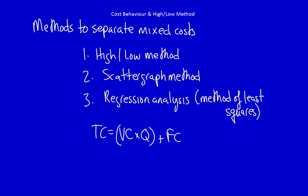There are three methods to separate a mixed cost into its fixed and variable components: the high-low method, scatter graph method, and regression analysis. When we do that, we end up with a cost function. We want the cost function because we want to be able to predict costs at different levels of activity. We're going to start with the high-low method.